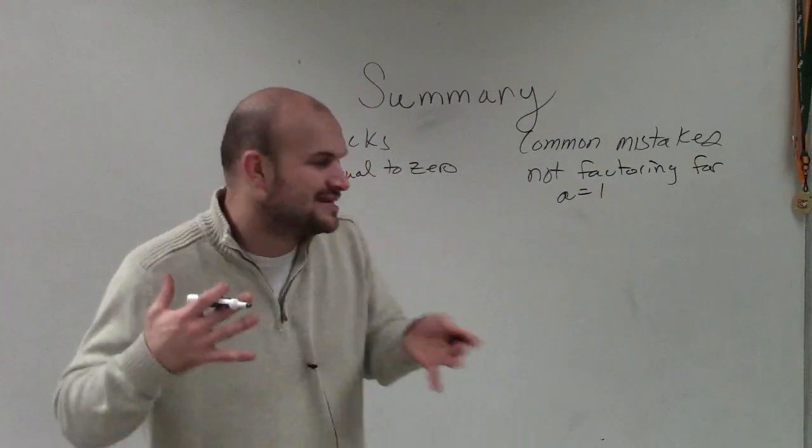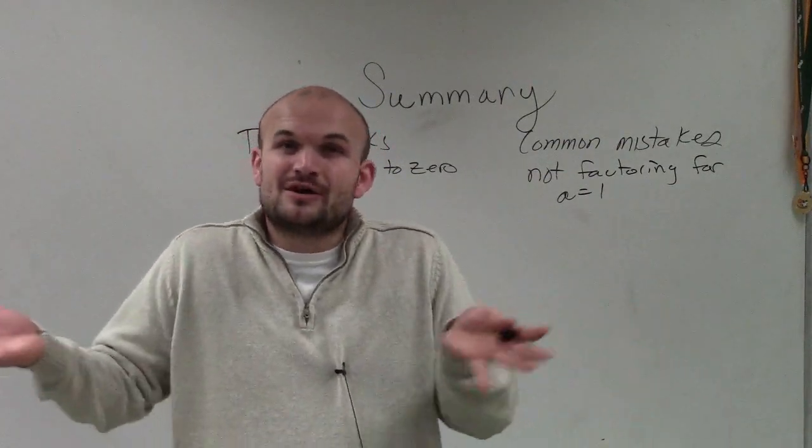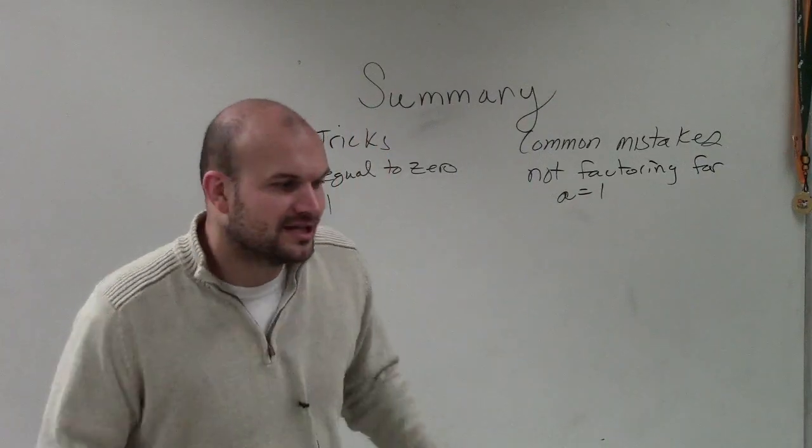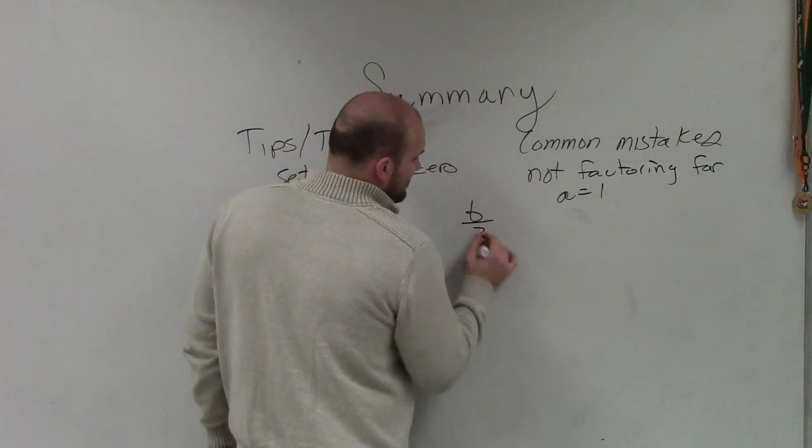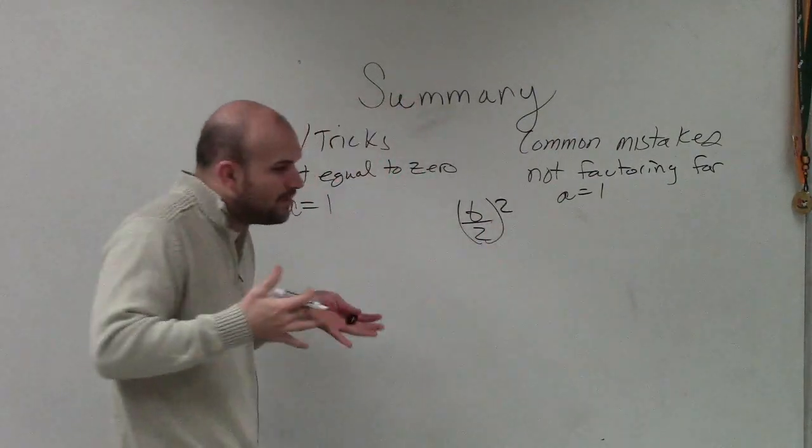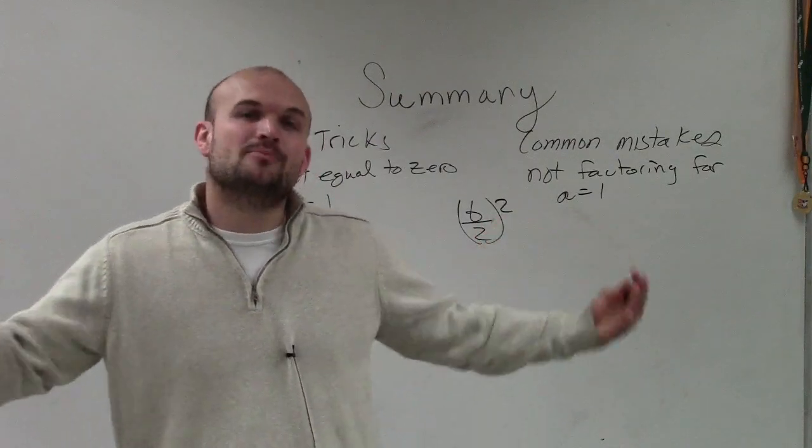So it's a little bit of tip and tricks. One common mistake that I see with students is they don't factor out, and then they try to complete the square after that, which makes it very difficult. Because remember, the whole process of completing the square, the big thing that we do is b divided by 2 squared.